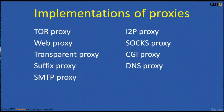A transparent proxy is normally located between the client and the internet, with the proxy performing some of the functions of a gateway. A CGI proxy accepts target URLs using a web form in the user's browser window, processes the request, and returns the results to the user's browser. A suffix proxy allows a user to access web content by appending the name of the proxy server to the URL of the requested content — for example, example.com.suffixproxy.com.